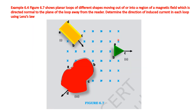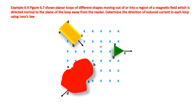It is given that the magnetic field is directed normal to the plane of the loop — that is, perpendicular to the plane — away from the reader. So the magnetic field lines are directed into the plane.